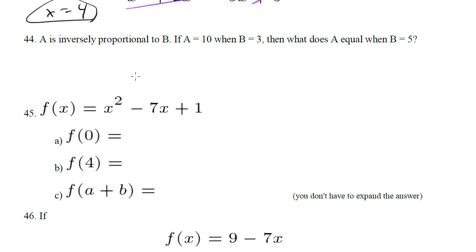A is inversely proportional to b. So remember inversely proportional meant a times b is going to equal some constant k. So if a equals 10 when b equals 3, so a is 10, b is 3. What is a equal when b is 5?